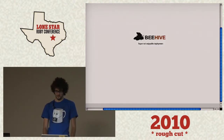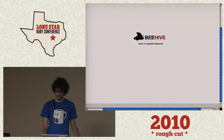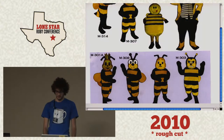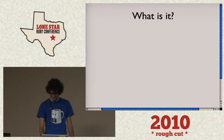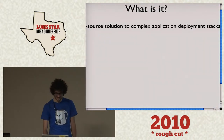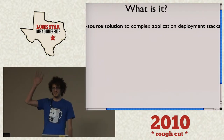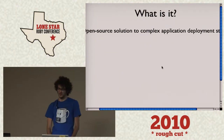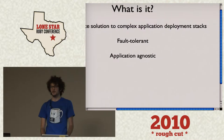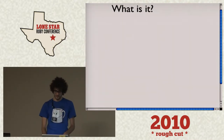So less about me and more about what I'm actually going to talk about today, which is Beehive. The subtitle is Scalable Application Deployment, as the program suggested. What is it? Beehive is an open source solution to complex application deployment stacks. It's fault tolerant, application agnostic — we'll get into that later. It's natively scalable, event driven — which is important — another point we'll touch on in a little while.